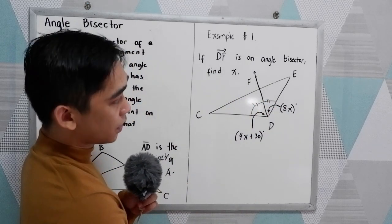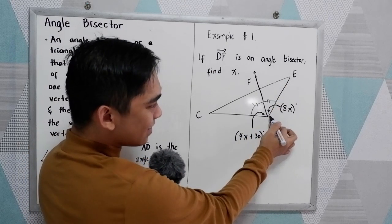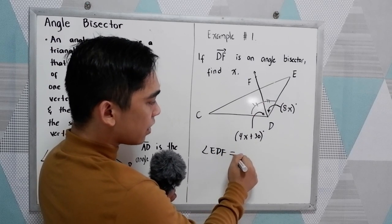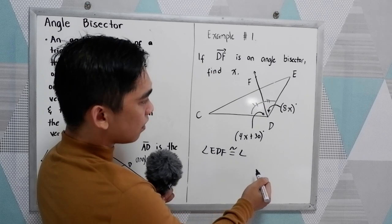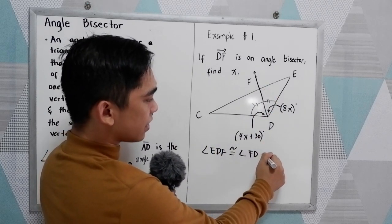Find X. We know that angle EDF is congruent to angle FDC.